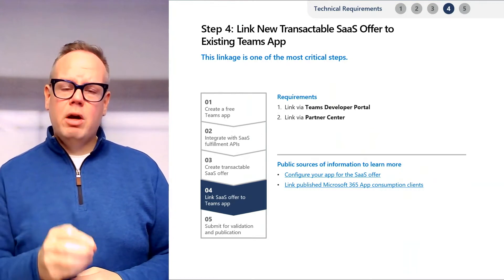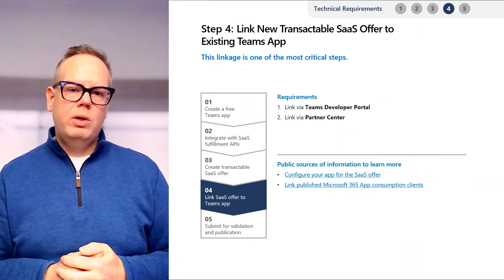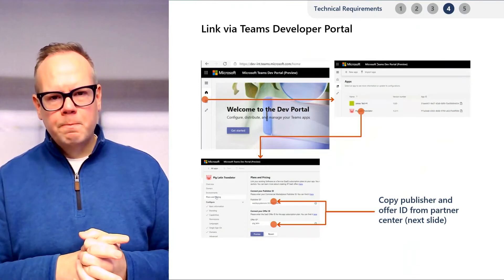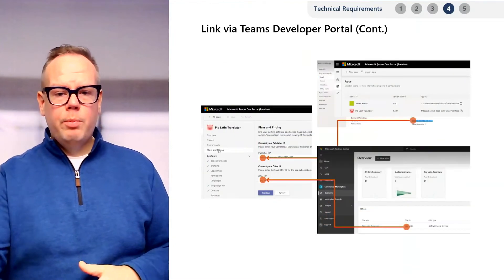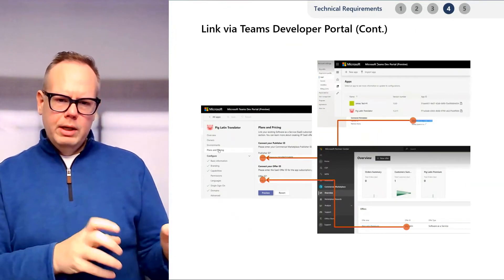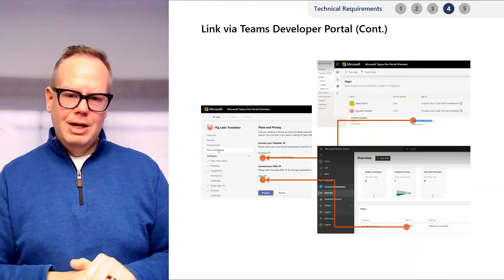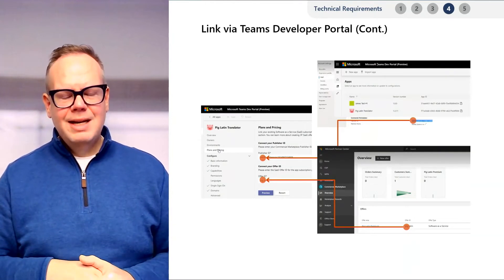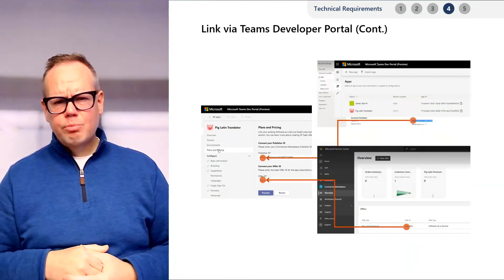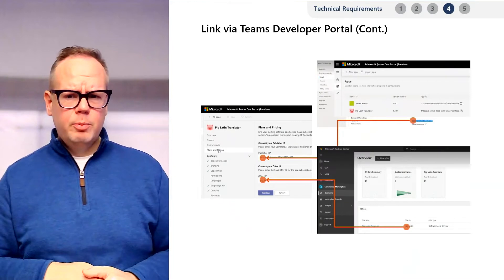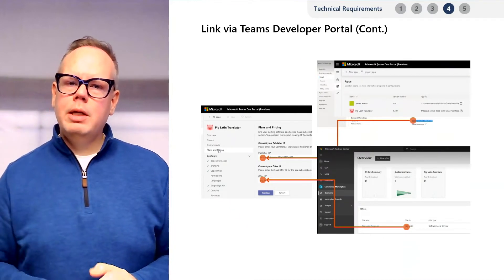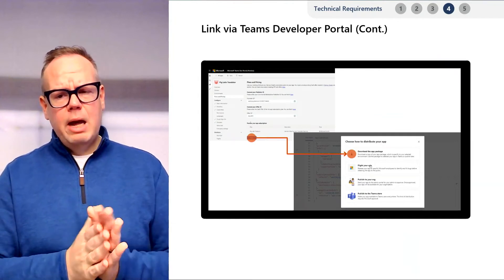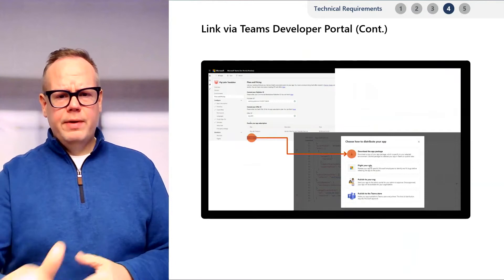Starting in the Teams developer portal, locate your app and open its configuration. Under Plans and Pricing, enter your publisher ID and offer ID from Partner Center. Your publisher ID can be found in the Legal Info section and your offer ID in the Overview section. Click Preview to verify that the correct offer details are loaded from Partner Center — this step updates your app manifest with the provided information. If your plan does not load, validate that you have a per-user pricing model selected in Partner Center and not flat rate. Then save a copy of your app package with the updated app manifest and upload it to Partner Center for validation.